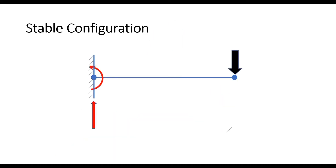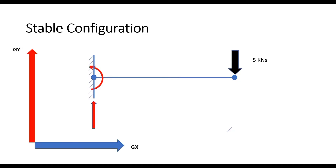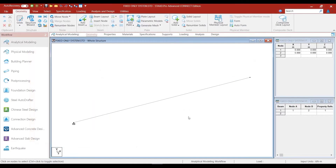Now let us consider the case of a point load acting on the tip of the cantilever beam. Let us consider the load as 5 kN. With respect to the global axis system as shown, this load will be defined as Fy equal to minus 5 kN.